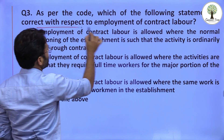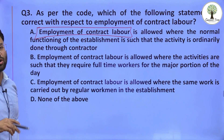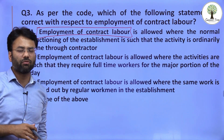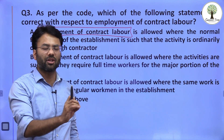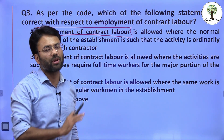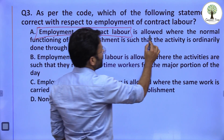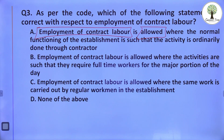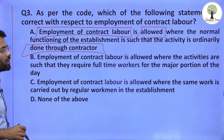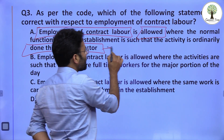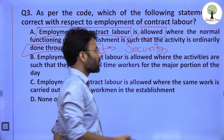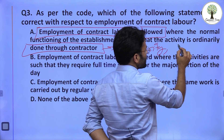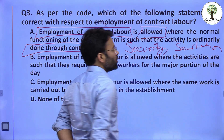The employment of contract workers is regulated by various Acts and the new labour code also brings flexibility here. The first option says contract workers are allowed where the normal functioning of the establishment is such that the activity is ordinarily done through a contractor. For example, security or sanitation — establishments regularly hire third-party agencies for these functions — so contract workers can be hired for such purposes.